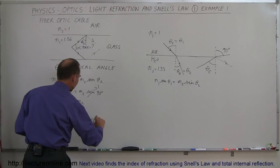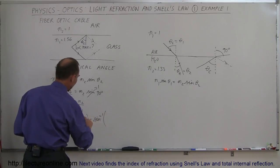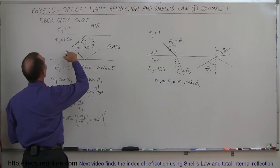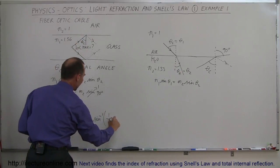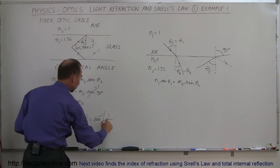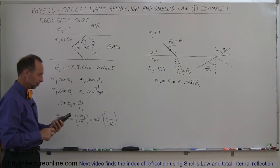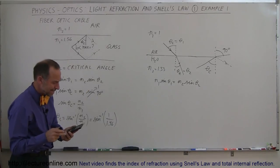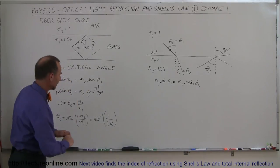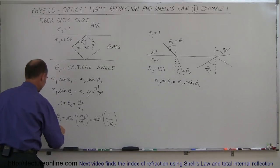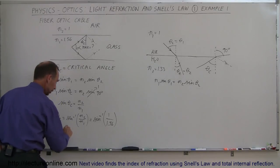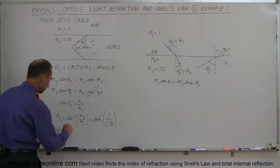So this would be equal to the arc sine of n2 is where we're going to. That would be 1 divided by n1 is where we came from. It's 1.56. And it's 39.87, about 39.9 degrees. So the critical angle is equal to 39.9 degrees.